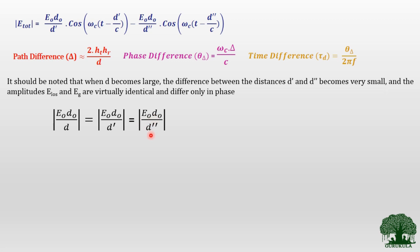When D becomes very large, the difference between D′ and D″ goes very small, so I can approximate: E₀D₀/D = E₀D₀/D′ = E₀D₀/D″. This means the signal will not vary much in amplitude but will vary only in terms of phase, so both terms can be combined into a single common term E₀D₀/D.